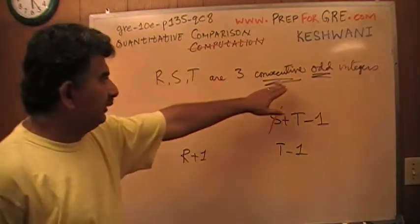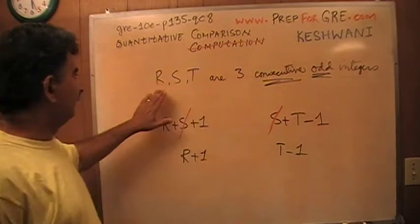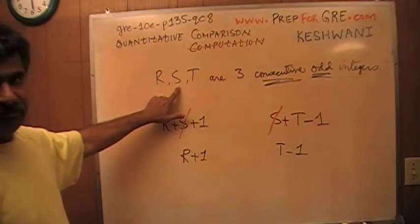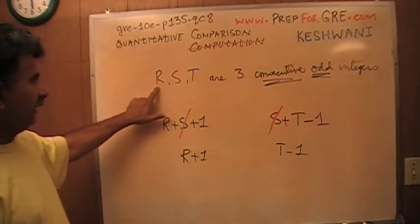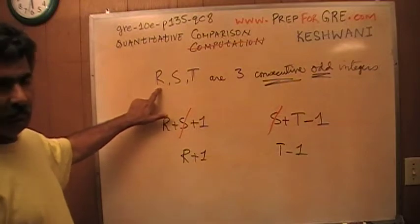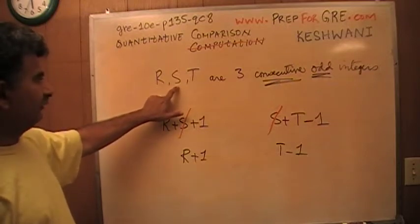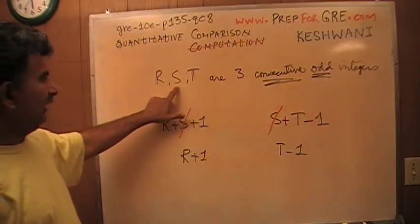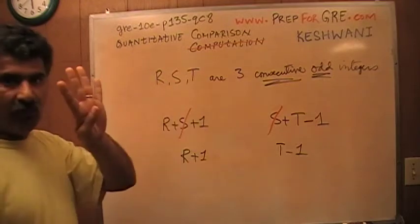Since they are consecutive odd integers, this number S which comes after R is going to be 2 more than R. For example, if this is 3, this is going to be 5. This is 2 more, and this is 2 more than S. Therefore, the difference between R and T is 4.